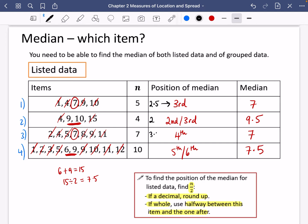For this one here, seven, half of seven is 3.5. Yep, that's going to round up to four. Half of 10 is five. So you're going to do the fifth and the sixth next door to each other. So this is only for listed data.